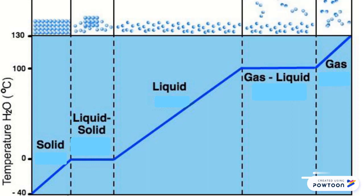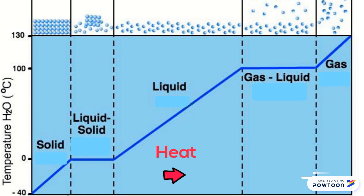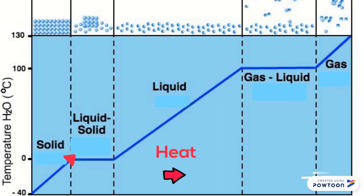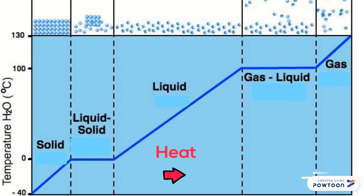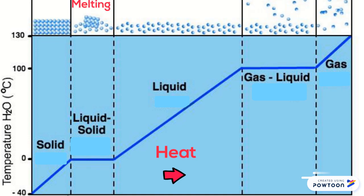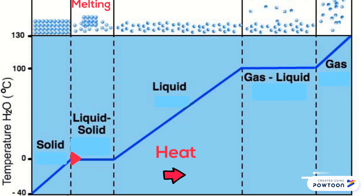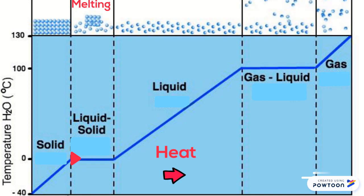Let's assume we're adding energy in the form of heat. As we go from negative 40 degrees Celsius up to 0 degrees Celsius, this substance is a solid the whole way. At 0 degrees, the substance begins to melt — it changes from a solid to a liquid. Notice that during this period the temperature doesn't get any higher; it stays the same. This will be true until all of the solid particles are completely gone.